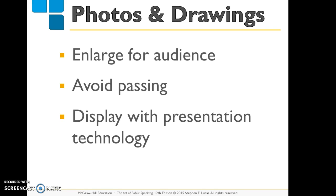The next type is photos and drawings. Photographs and drawings can be a great advantage to a speaker. Pictures are two-dimensional representations that include photographs, line drawings, diagrams, maps, and posters. Diagrams visually explain how something works or operates, while maps help listeners visualize geographic areas and understand relationships and proportions. All these different types of photographs and drawings can work really well to emphasize what you're trying to say.